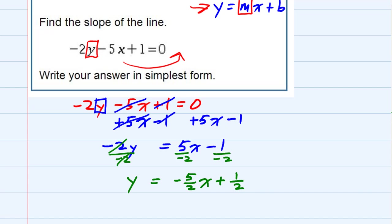The negatives cancel to become positive. And now that we have it in y equals mx plus b form, I can just look at the coefficient in front of the x, and that is our slope. So for this one, the slope is negative 5 halves.